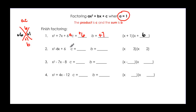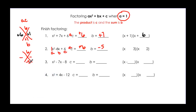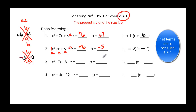Again let's find ac: a is 1 and c is 6, so ac = 6. But b, the middle term, is negative 5. In the X, positive 6 on top and negative 5 on the bottom. I need factors of 6 that add to negative 5 — both signs must be negative. Negative 3 and negative 2 add to negative 5. So the factorization is (x-3)(x-2).